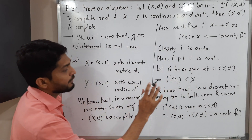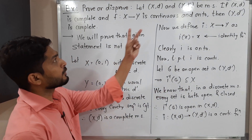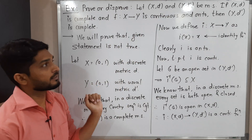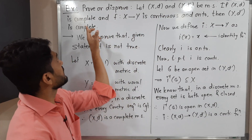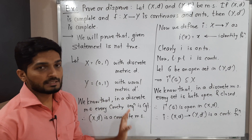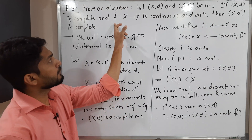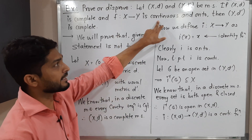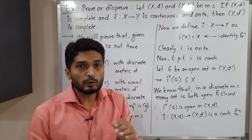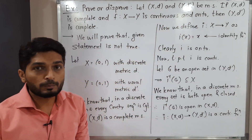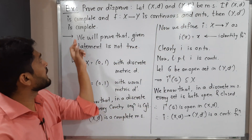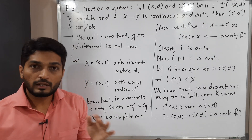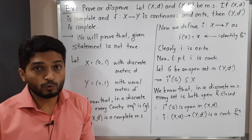So step by step we have proved all the required conditions. We have two metric spaces (X, d) and (Y, d'); (X, d) is complete; the identity function i is continuous and onto. Now we simply have to prove that (Y, d') is not complete.